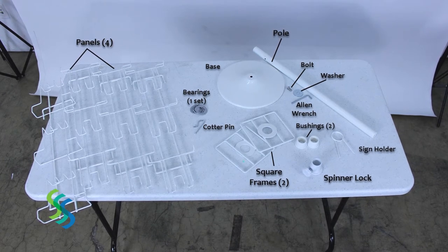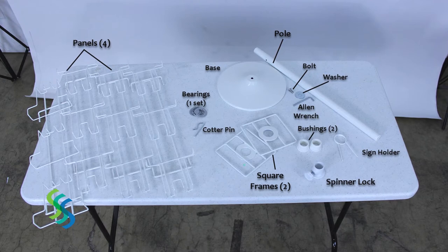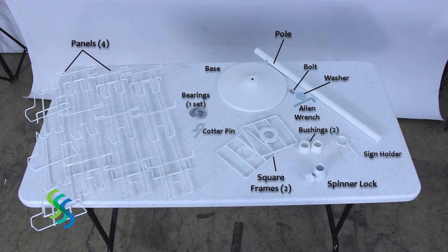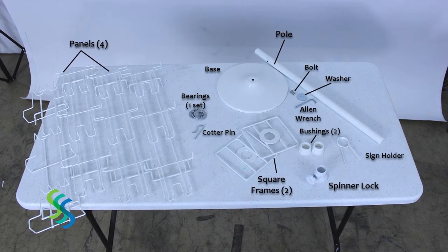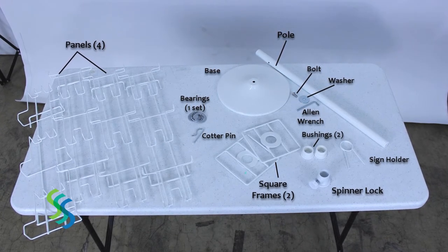The tabletop spinner ships with four pocket panels, a base, a bolt, a washer, a pole, two square frames, two bushings, a spinner lock, a set of bearings, a cotter pin, an allen wrench, and a sign holder.